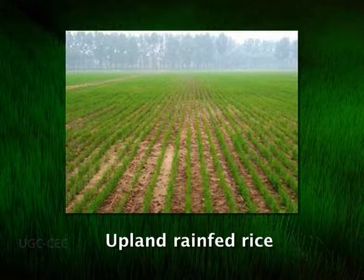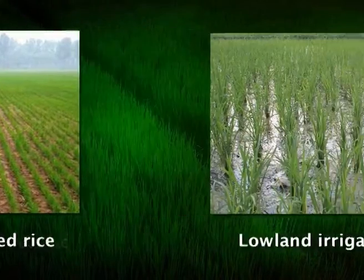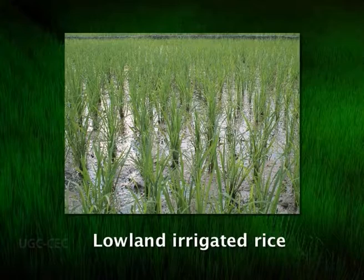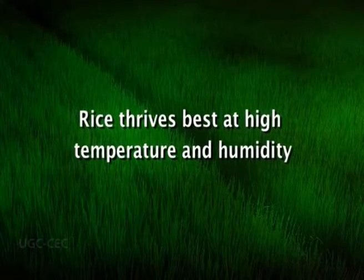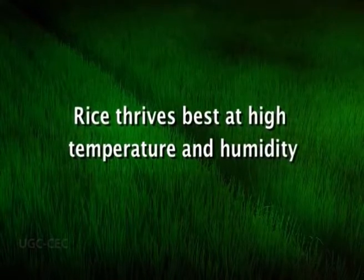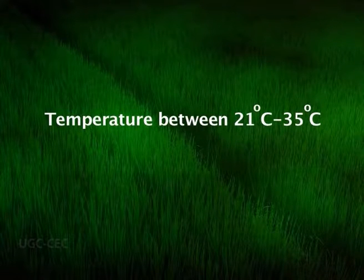Upland varieties need a minimum of 60 to 120 cm of rainfall, whereas the lowland types demand 180 to 240 cm of rainfall. The rice crop thrives best under conditions of high temperature and humidity. The average temperature during the growing phase ranges between 21 and 35 degrees Celsius.